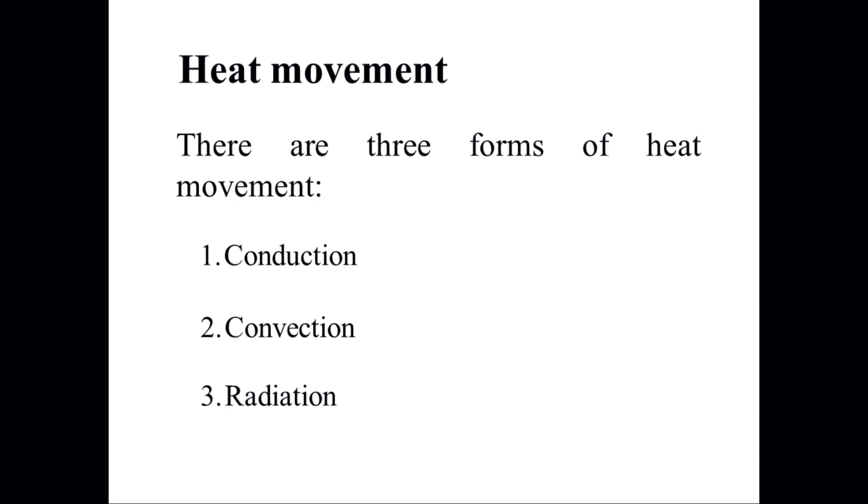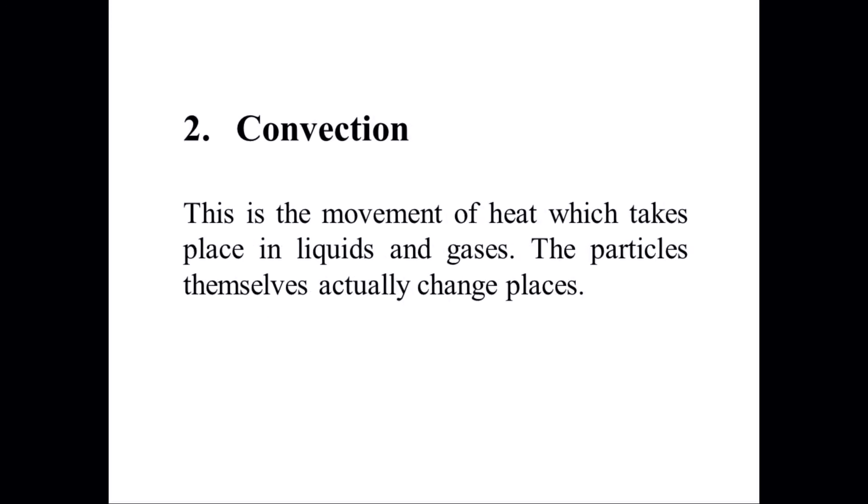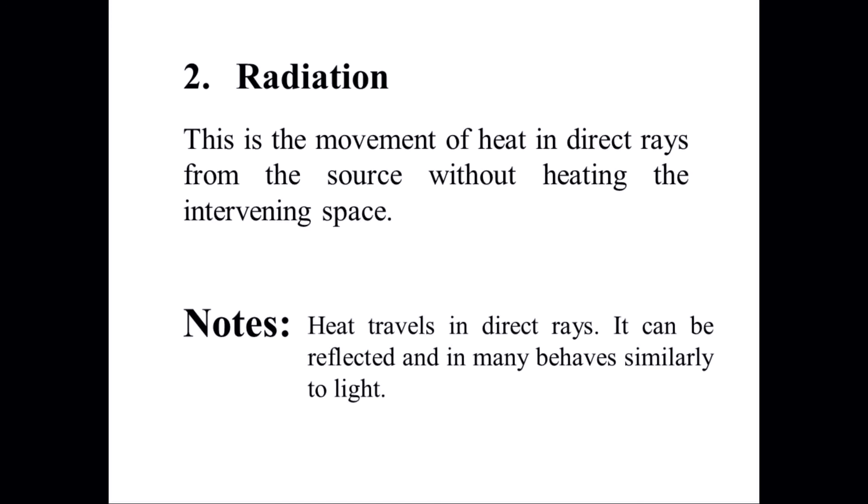There are three forms of heat movement: conduction, convection, and radiation. Conduction is the movement of heat in a solid — heat passes from one particle to another without the particles themselves moving. Convection is the movement of heat in liquids and gases, where the particles themselves change places. Radiation is the movement of heat in direct rays from the source without heating the intervening space. Heat travels in direct rays, can reflect, and behaves similarly to light. That concludes this module.